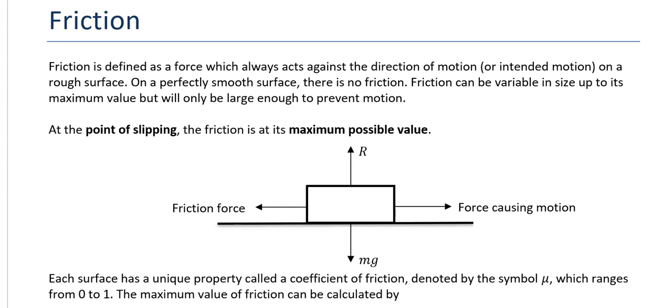Friction is defined as a force which always acts against the direction of motion or intended motion on a rough surface. On a perfectly smooth surface there is no friction. Friction can be variable in size up to its maximum value but will only be large enough to prevent motion.